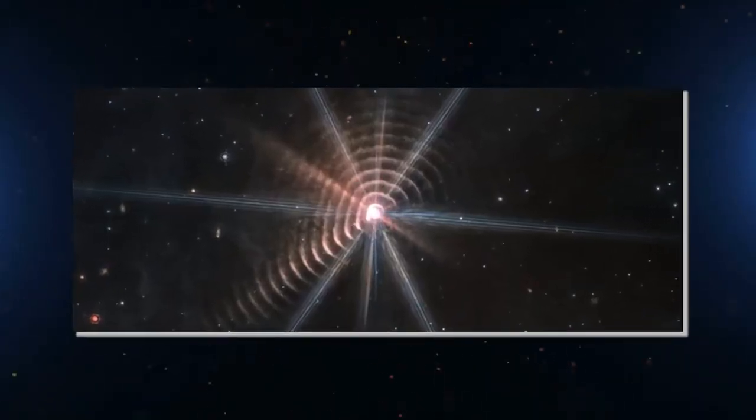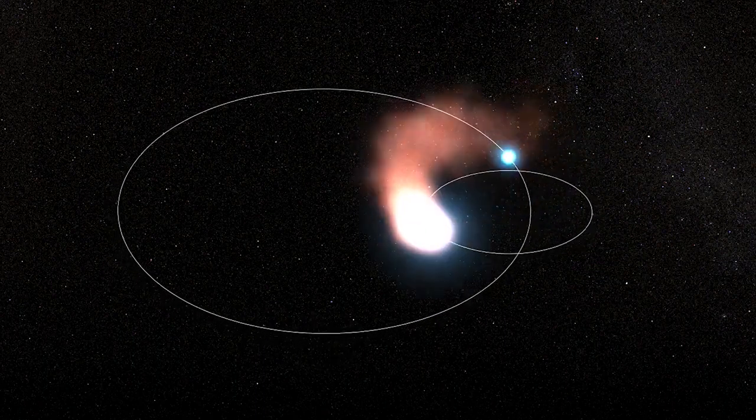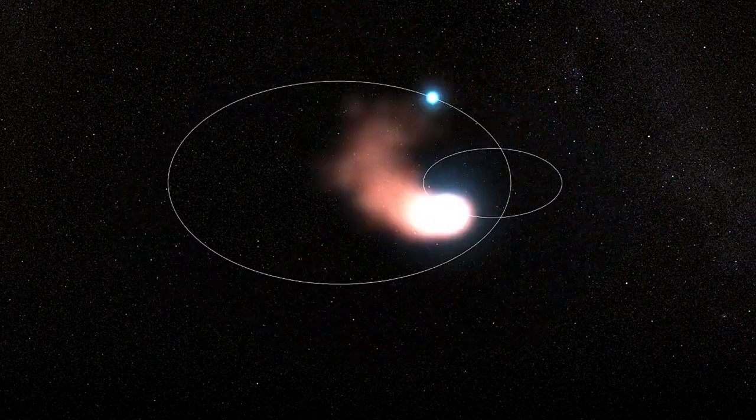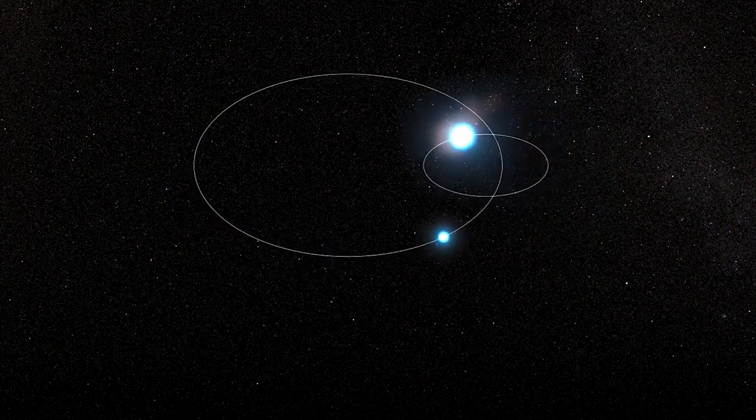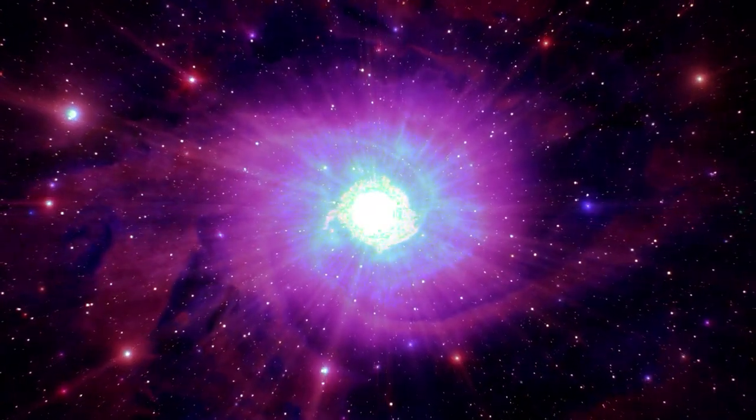WR140 is one of the few Wolf-Rayet stars in a binary system that has a lot of dust around it. It is in orbit around another star, which is a huge blue supergiant with its own fierce wind. Only a few systems like WR140 are known in the whole galaxy, but these few give astronomers the most beautiful and unexpected gifts.